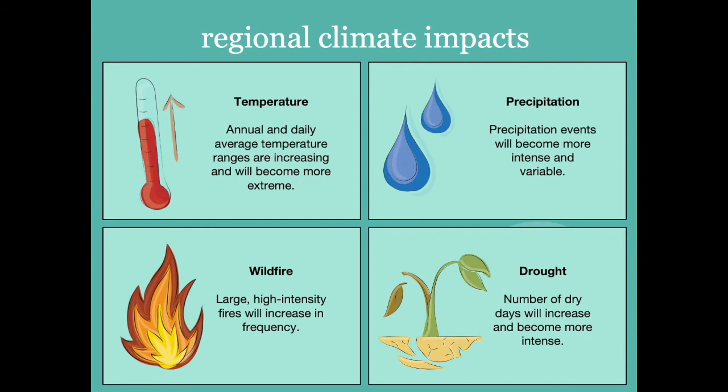Here in our region of Southern California, we will see the impacts of our changing climate in several different ways. Regarding temperature, we'll see annual and daily average temperature ranges increase and become more extreme. For precipitation or rain, we will see these events becoming more intense and variable than they ever were before. We also experience wildfire — large, high-intensity fires will increase in frequency — and most importantly, drought, where the number of dry days will increase and become more intense.